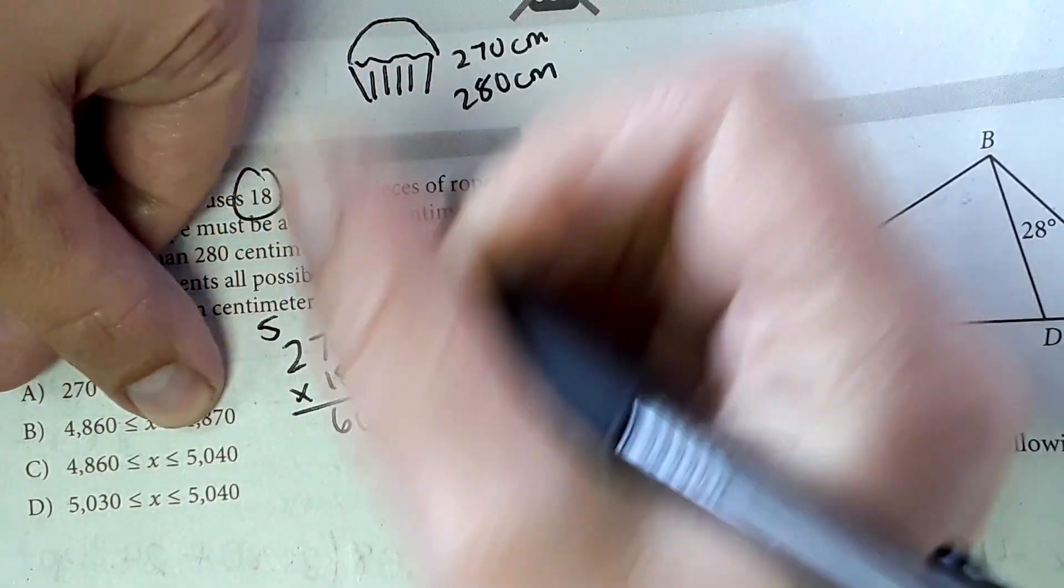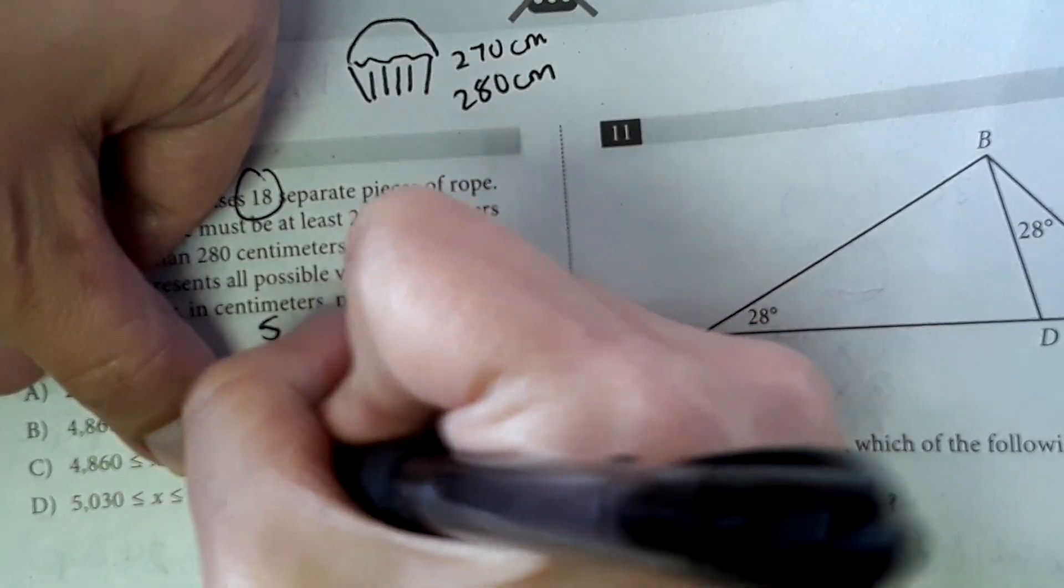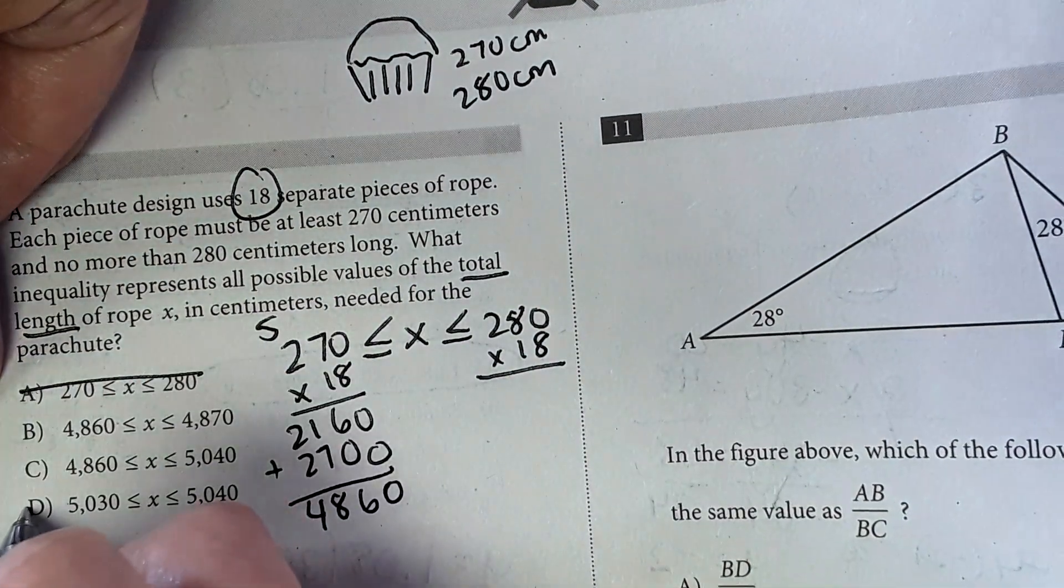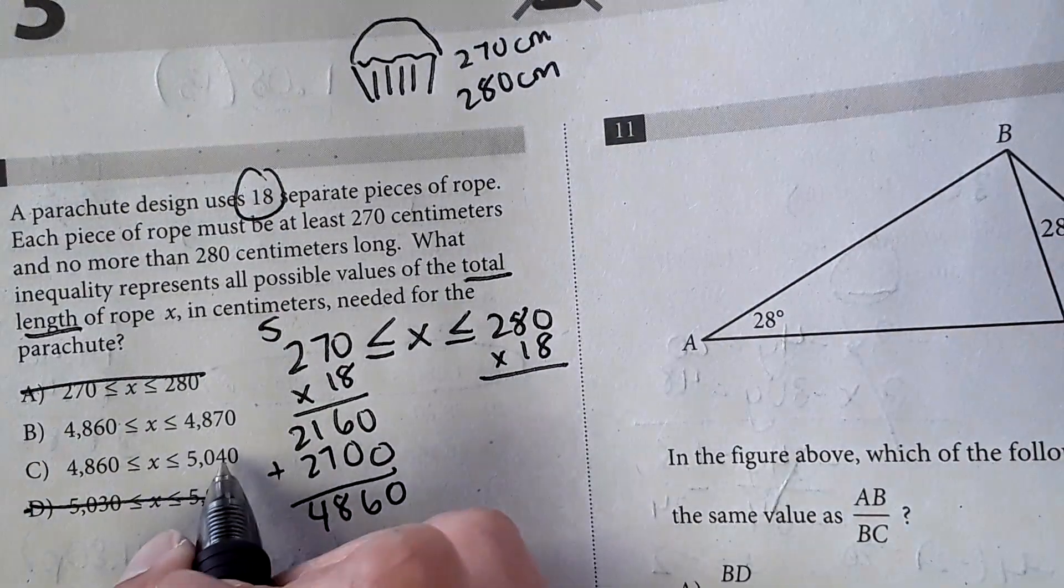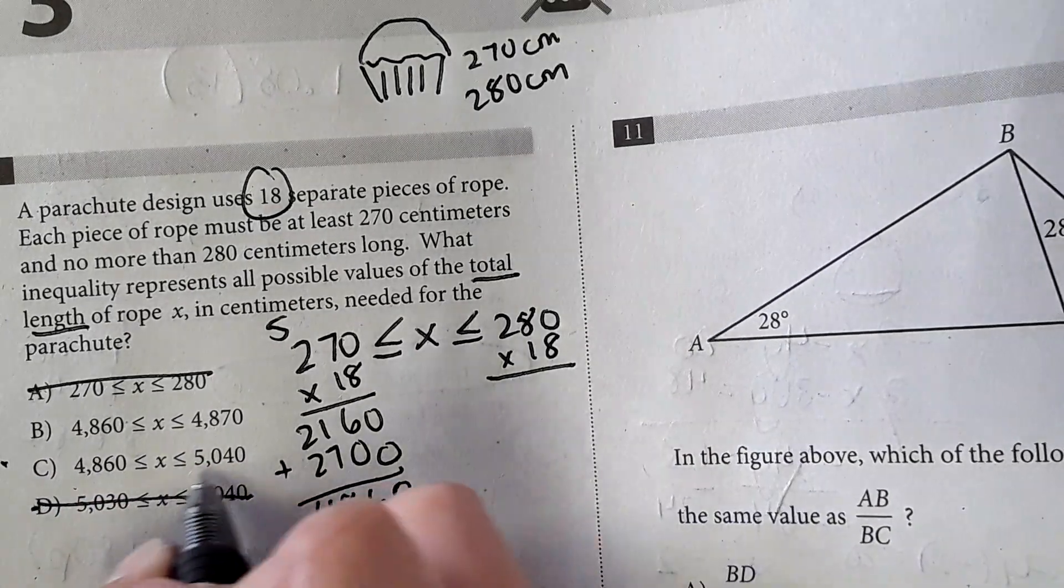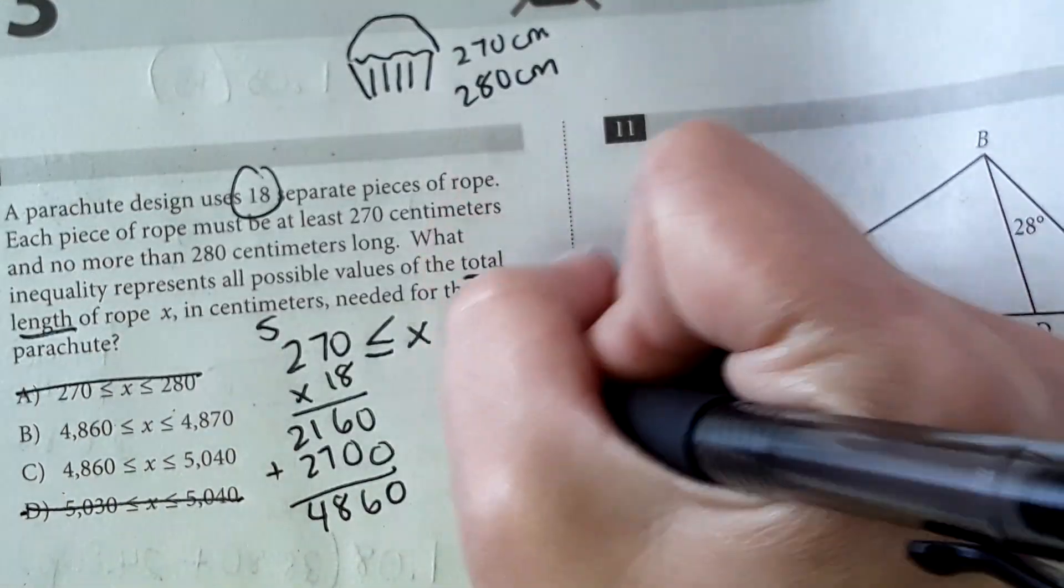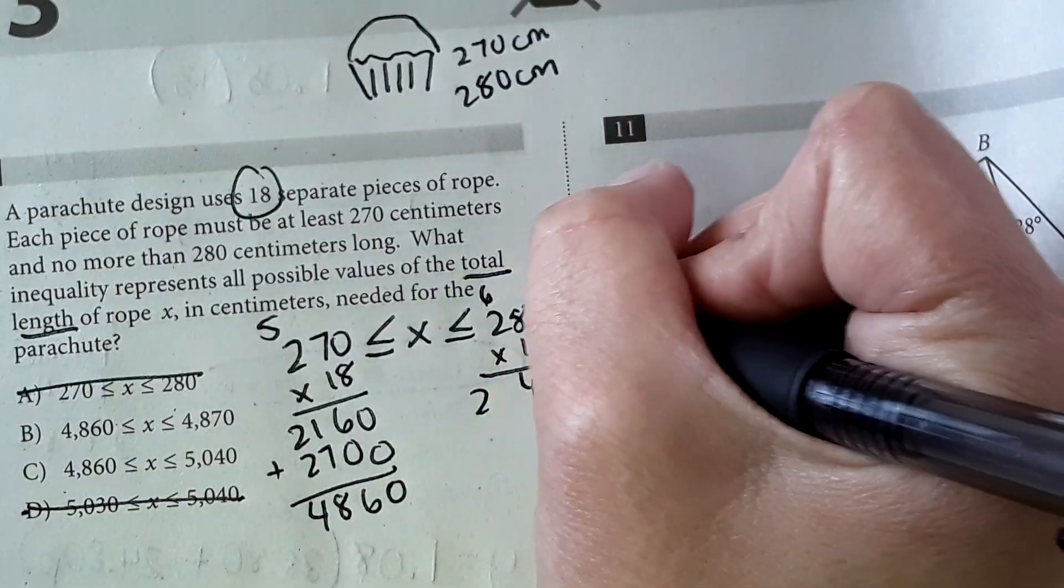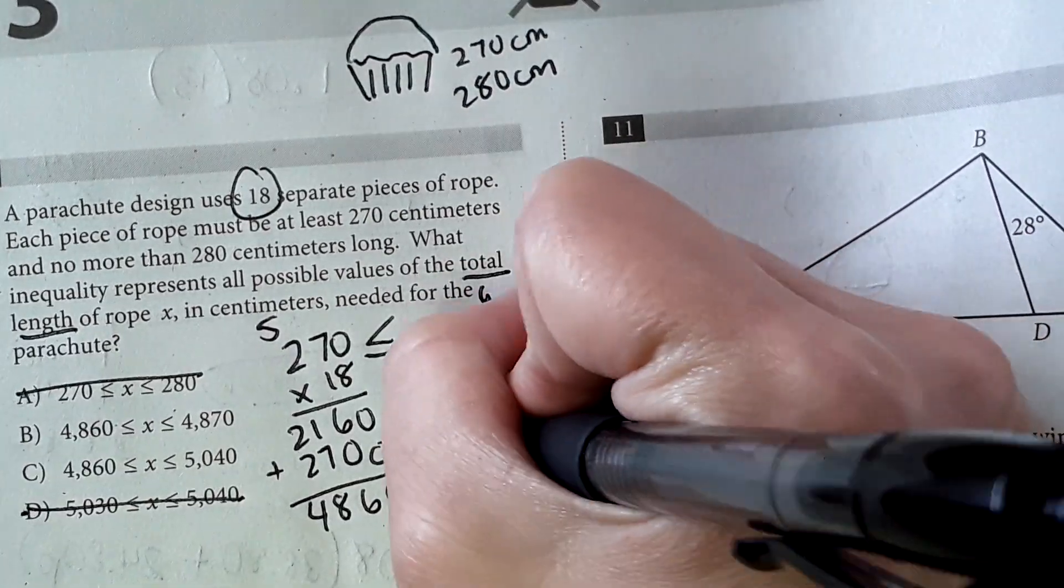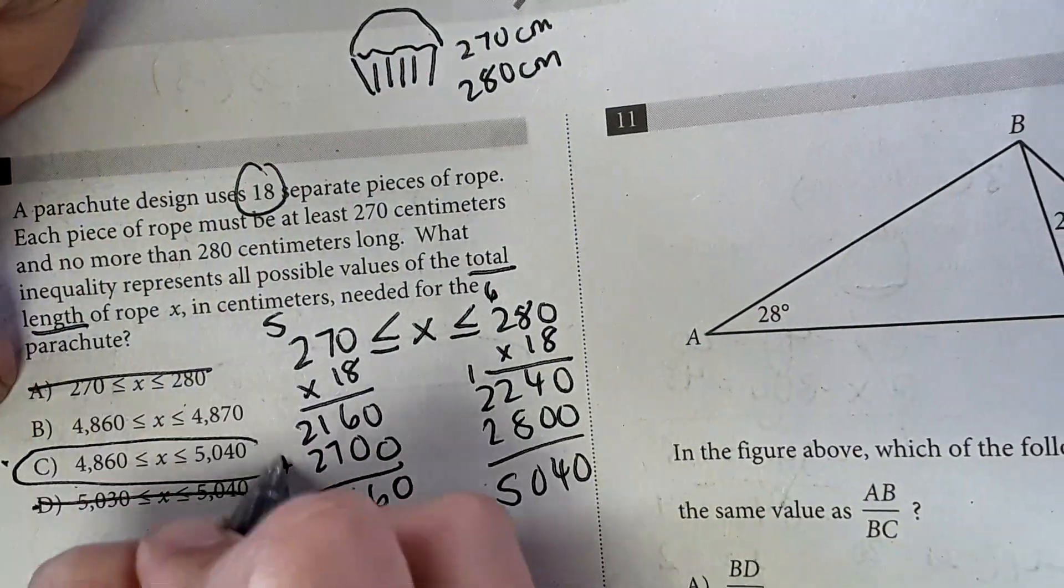So 0 times 8 is 0. 7 times 8 is 56. 2 times 8 is 16. Plus 5 is 21. Put a 0 there. Then 0 times 1 is 0. 7 and 2. We add this up. We have 48 and 60. So I'm crossing out these two answers. If I was pressed for time, I might look at these and see which one's logical. And you could probably guess that C is the most logical answer out of these two. But just to do the multiplication over here. 16 plus 6 would be 22. 0, 0, 8, 2. And I get 50, 40. So there we go. Answer C.